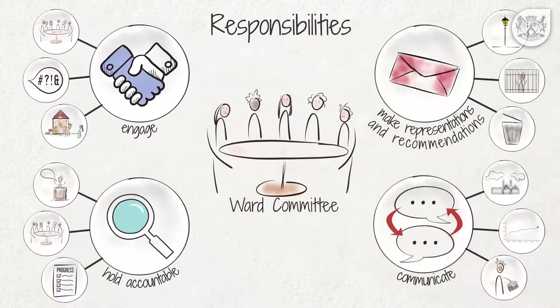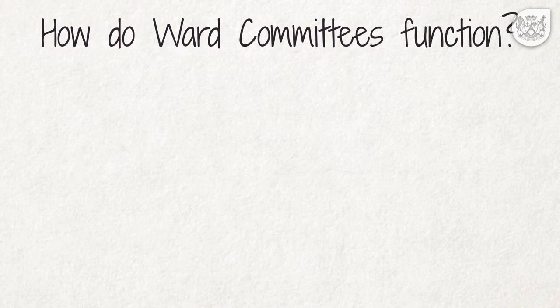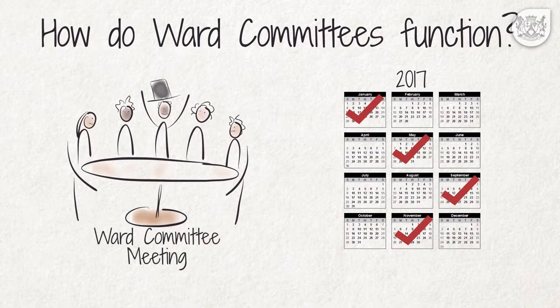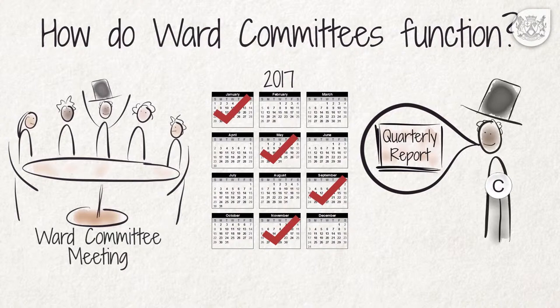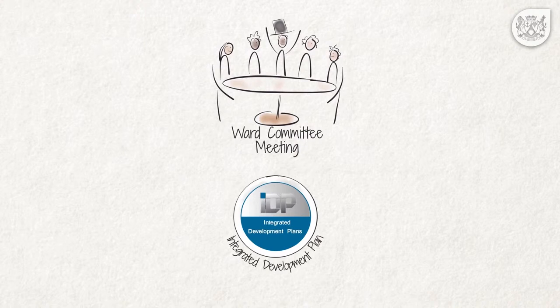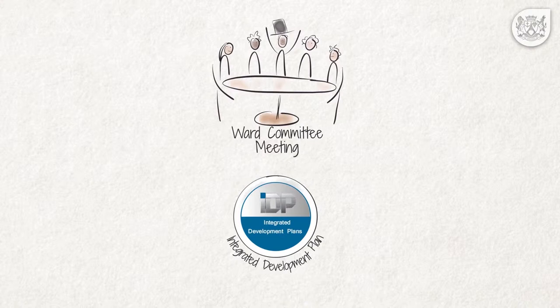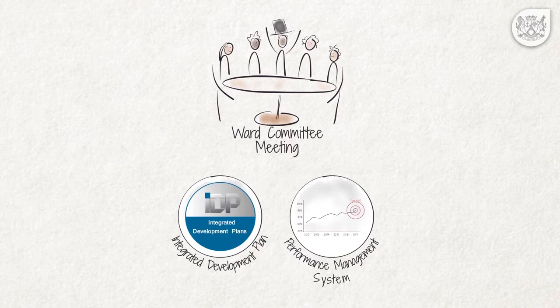How do ward committees function? Ward committees should meet at least four times a year because ward councillors must report back to their wards on a quarterly basis. Other occasions when committees should meet are: when the Integrated Development Plan, or IDP, is being drafted or reviewed — the IDP is the municipality's principal strategic plan that spells out what it aims to achieve and how — and when the performance management system is compiled or reviewed, which is used to measure performance and targets in terms of the municipality's strategies.